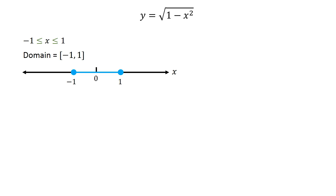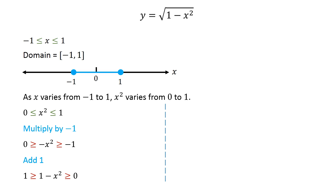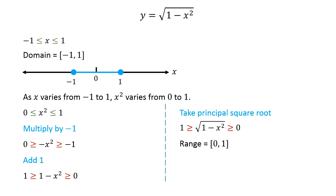Now let's find the range of this function. As x varies from negative 1 to 1, x squared varies from 0 to 1. Multiplying this inequality by negative 1, we get negative x squared is less than or equal to 0 and greater than or equal to negative 1. Now adding 1 to this inequality, 1 minus x squared is non-negative on the domain of this function. So taking the principal square root, we get square root of 1 minus x squared is greater than or equal to 0 and less than or equal to 1. Therefore, the range of this function is the closed interval from 0 to 1.